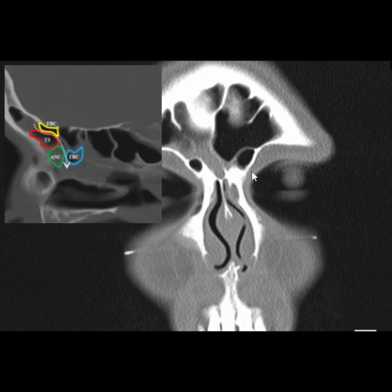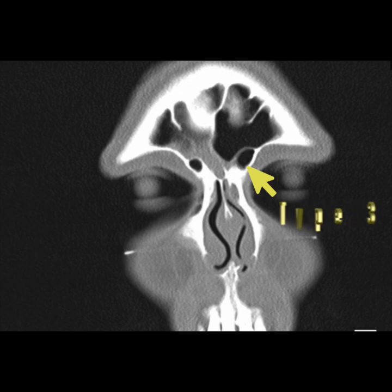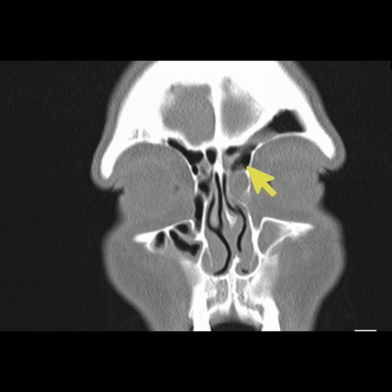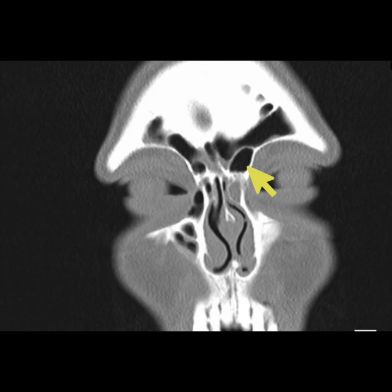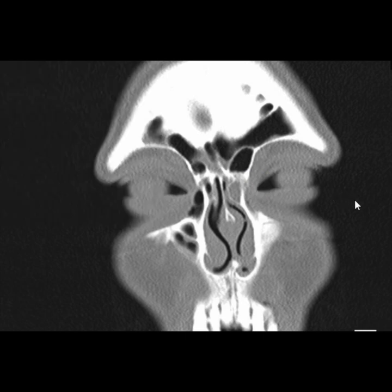Type 3 is a large pneumatization from the frontal recess into the frontal sinus — so from the frontal recess into the frontal sinus, this becomes a type 3 cell. To remember the type 3 cell: a part of its lower body is sitting on the frontal recess, considering this is the upper body. Let's have a look from a different angle.